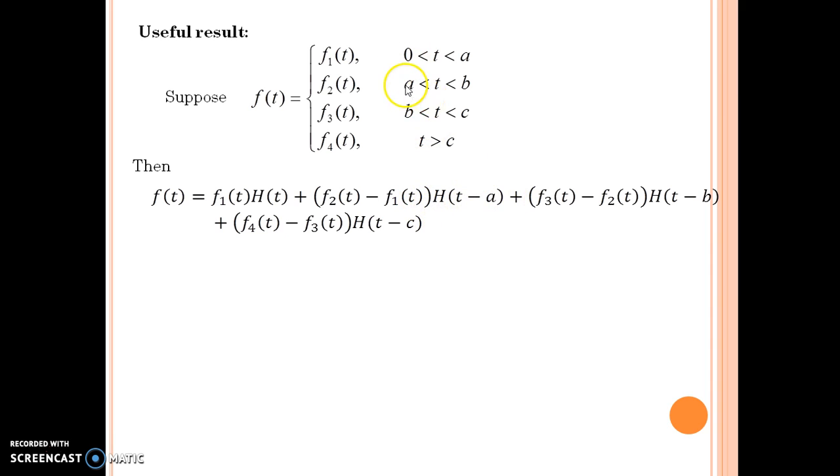This a is the lower limit of the interval here. Then (f3 - f2) times H(t-b).